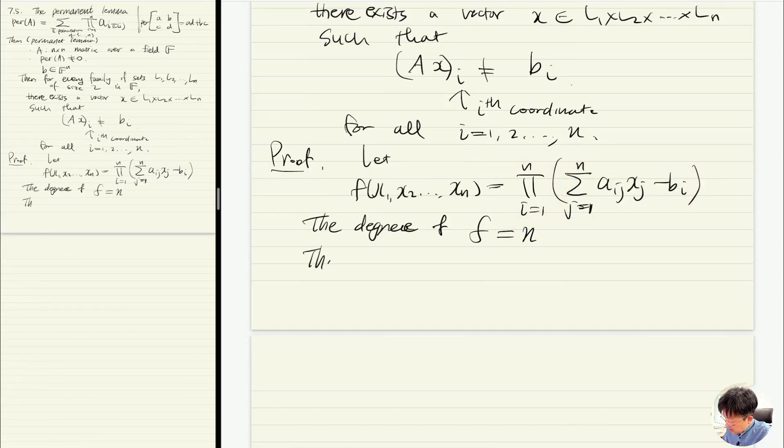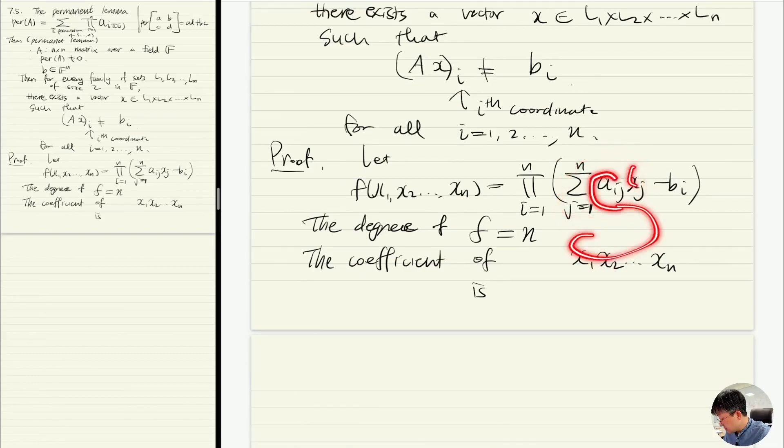Now what is the coefficient of the highest degree monomial? Of course we want to look at the coefficient of x1 x2...xn. In that case you're ignoring minus b_i and you never multiply same x_j twice. So you're going to consider all permutations of x_i's and then multiply a_ij, so that's exactly the permanent of A.